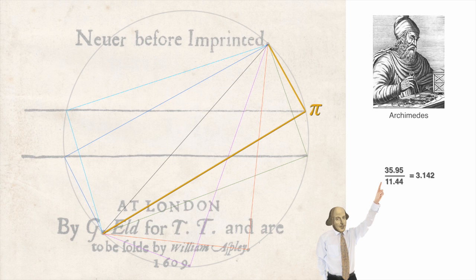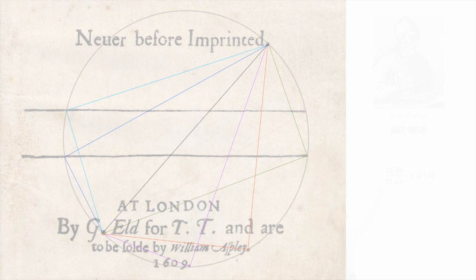Archimedes calculated it almost this accurately around 287 BCE, so it's no surprise that Shakespeare would know this. But this, hmm, this ratio is known simply as E. Nowhere near as famous as pi, but equally important. Shows up everywhere in higher mathematics. But here's our first mystery. E was not discovered until 60 years after the sonnets were published.